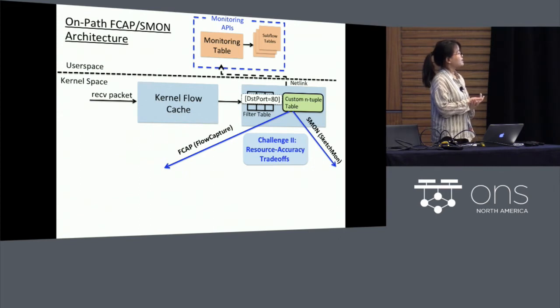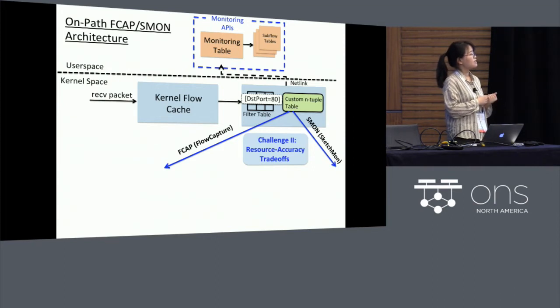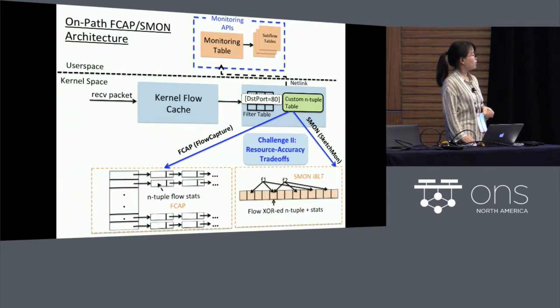So for the on-path designs, we propose both FCAP and SMON, which are different in the way of how this custom end table table is implemented. In FCAP, we use a straightforward linked list hash table to maintain the flow stats, while in SMON, we compress those flow stats in the Invertible Bloom Filter lookup table.